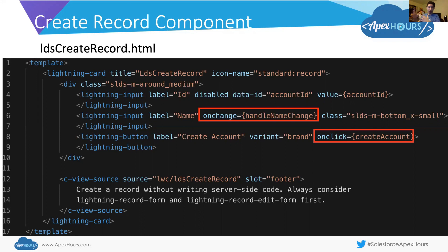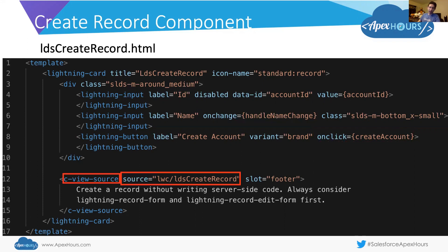For the name field, whenever it changes, we have our onChange event that fires off a method called handleNameChange. Our button — we want to do something when we click it, so we're listening for the onClick event. When onClick happens, we're going to call a method called createAccount. I also want to point out the bottom part of this component: the c-viewSource tag. That's a tag in the default namespace, meaning we're bringing in a component we built into this component.